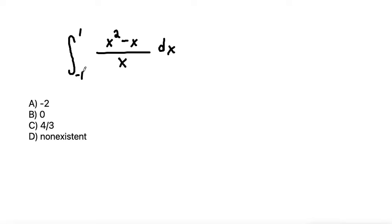So here we have an integral from negative 1 to 1 of x squared minus x over x dx. So integrals can often have a lot of different ways that you can approach the problem, but whenever I see a problem with a fraction that the numerator has more than one term and the denominator has only one term,